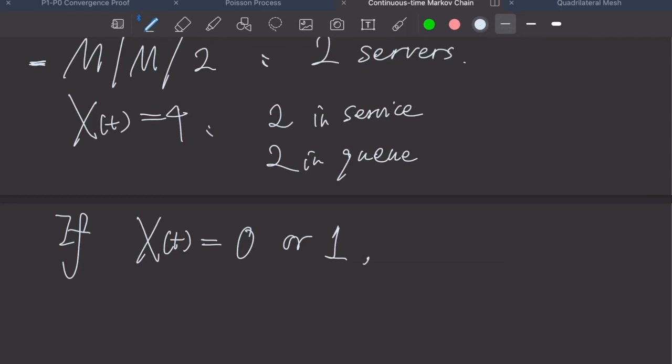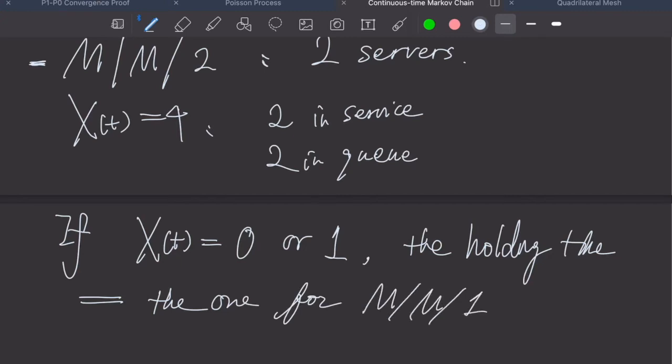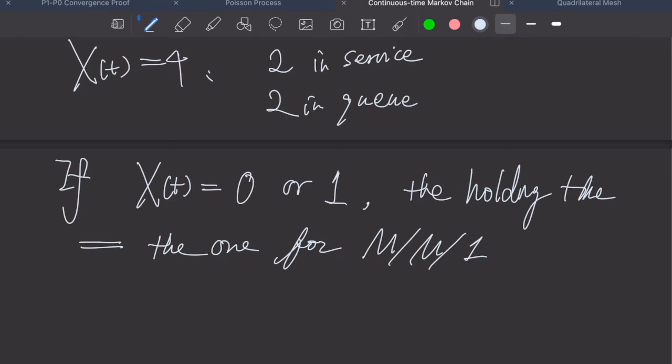If there is 0 or 1 customer in the system, basically the second server is idle before the next change. The holding time is the same with the one for M/M/1 model. V_0 is lambda, and V_1 is lambda plus mu.